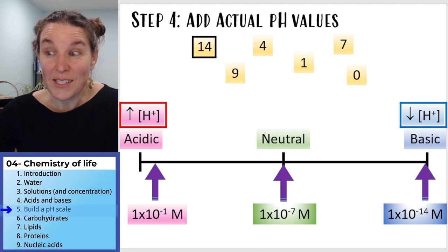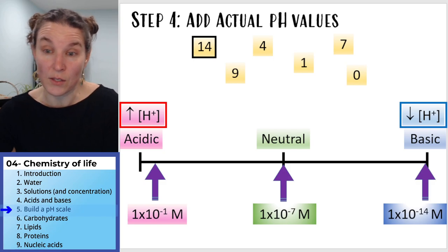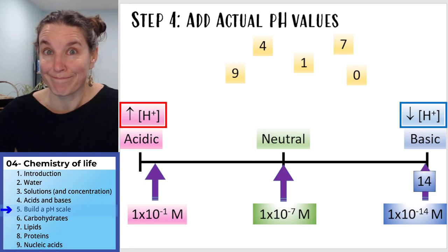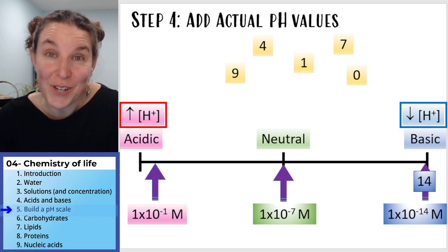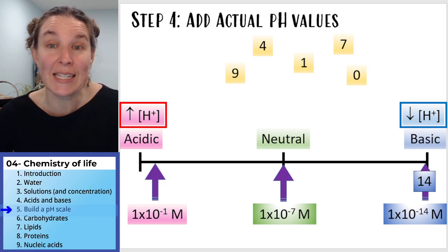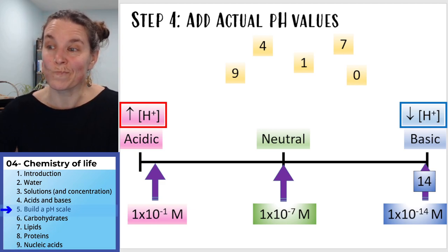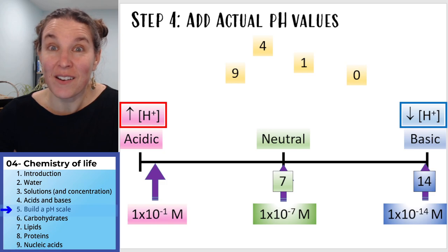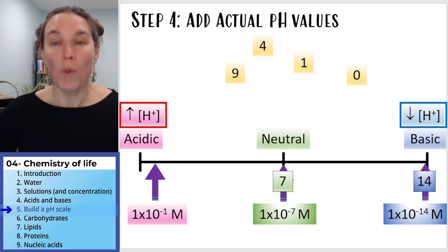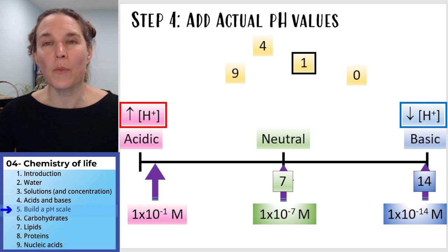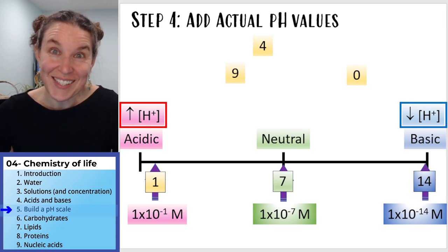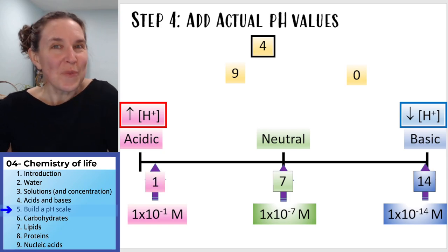Where might 14 go? How about in the zone where the concentration of hydrogen ions is 1×10⁻¹⁴? Where would you put the seven? Where you have 1×10⁻⁷ moles of hydrogen ions per liter of solution. Where are you going to put the one? Where you have 1×10⁻¹ moles of hydrogen ions per liter of solution.